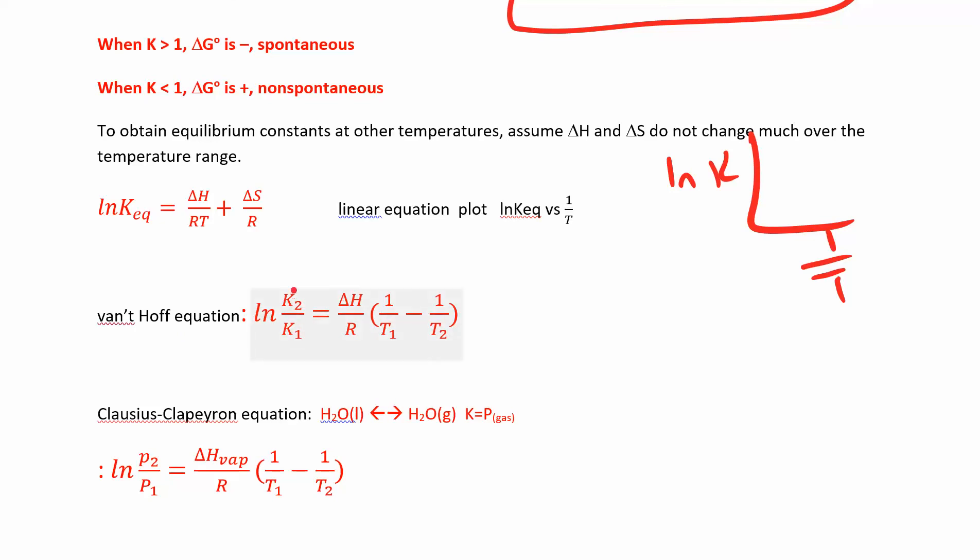You can also use the van't Hoff equation. This is looking at two equilibrium constants at different temperatures. Instead of making the graph, if you only have two temperatures you want to deal with, you can find delta H that way. If you have any four out of five of these variables, K1, K2, T1, T2, and delta H, you always know R is a constant. So if you have any four of those, you can find the other one.